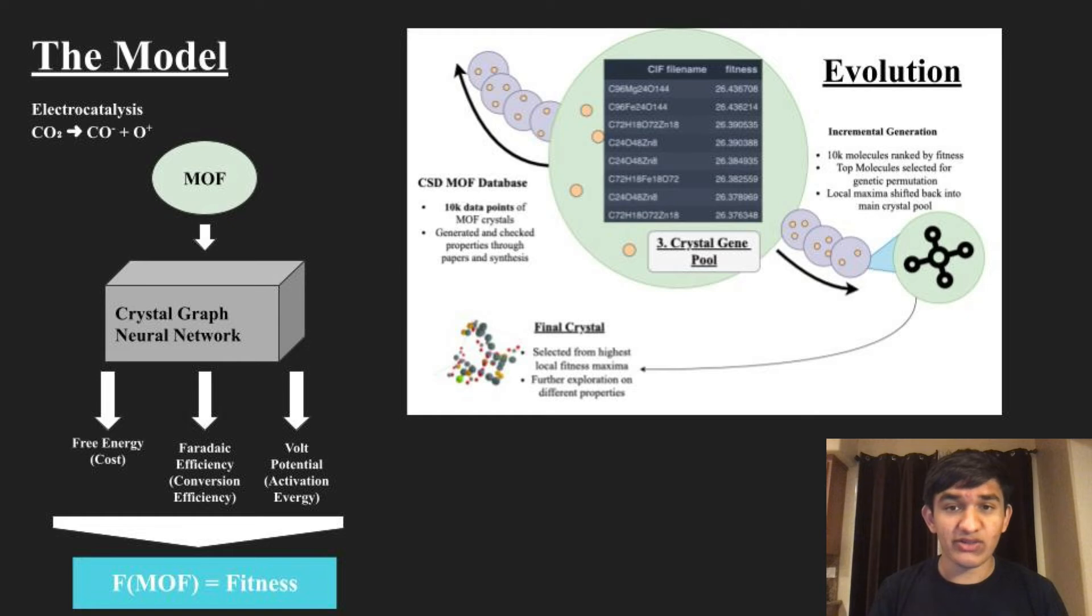The model I ended up using can be seen on the screen. To optimize the reaction with machine learning, I need to maximize three parameters: negative free energy to decrease the cost, Faraday efficiency to increase the reaction rate, and negative voltage potential to make it low energy. The main problem in this space is the lack of data to work with.